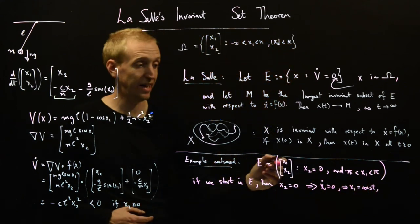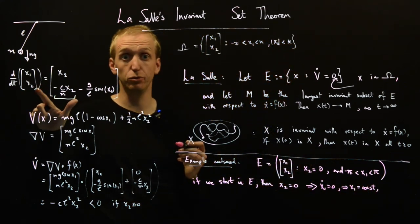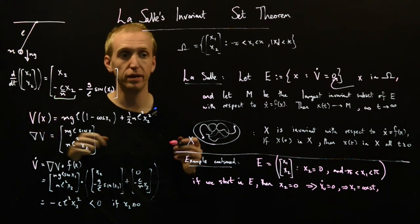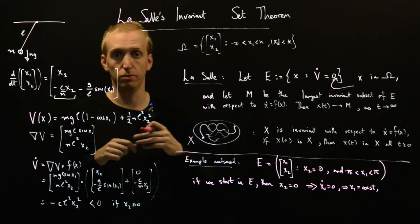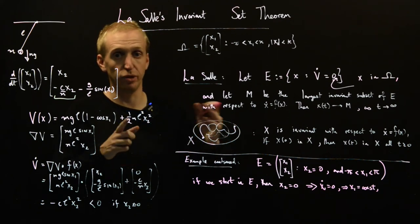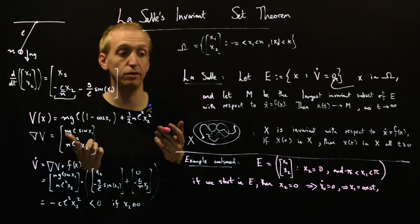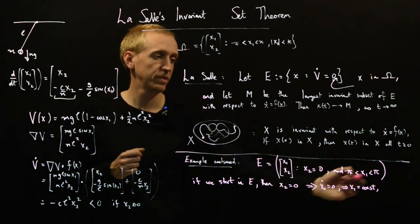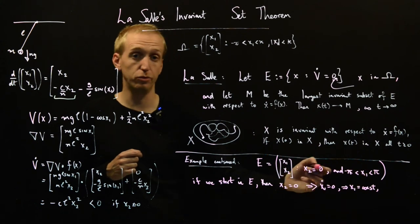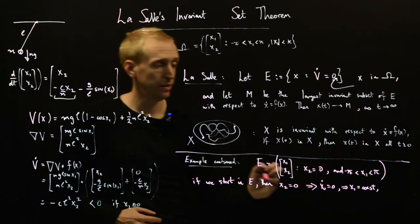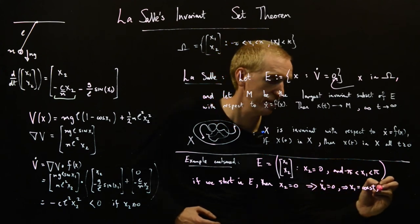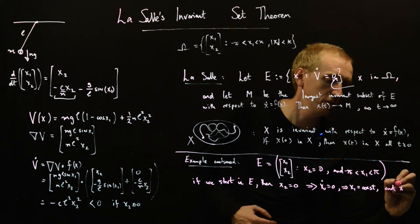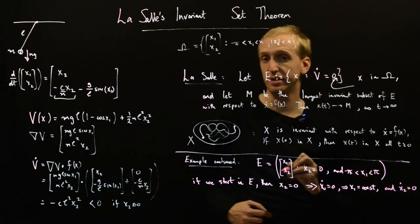And also, if x2 is equal to zero, then x2 dot must be equal to zero. If x2 dot is not equal to zero, then x2 will, as we evolve time, x2 will change from its zero value. And that would mean that we would leave this set. In E, x2 is always equal to zero. So it implies this and x2 dot is equal to zero.